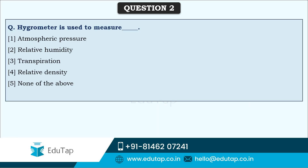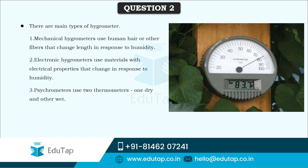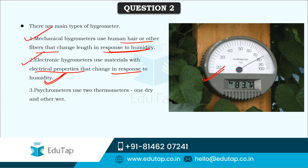The next question: a hygrometer is used to measure relative humidity — the amount of humidity that is present in the air. As you can see here, this is the hygrometer. There are various types of hygrometers: mechanical hygrometers use human hair or other fibers that change their length in response to humidity. Electronic hygrometers use materials with electrical properties that change in response to the humidity present in a particular environment.